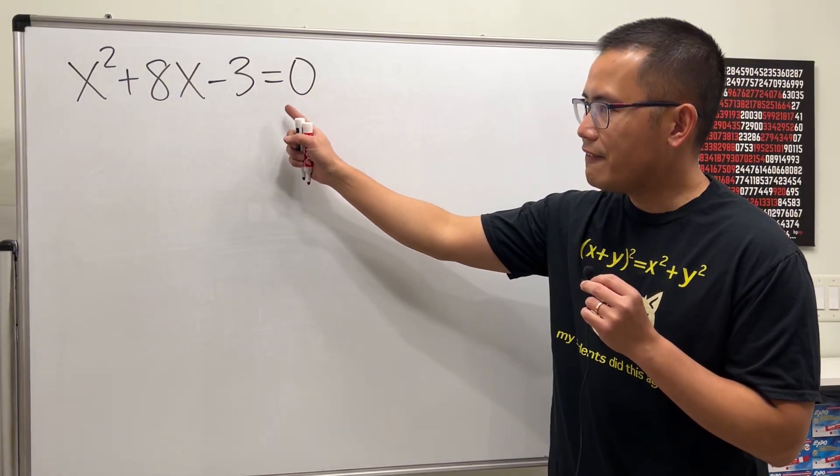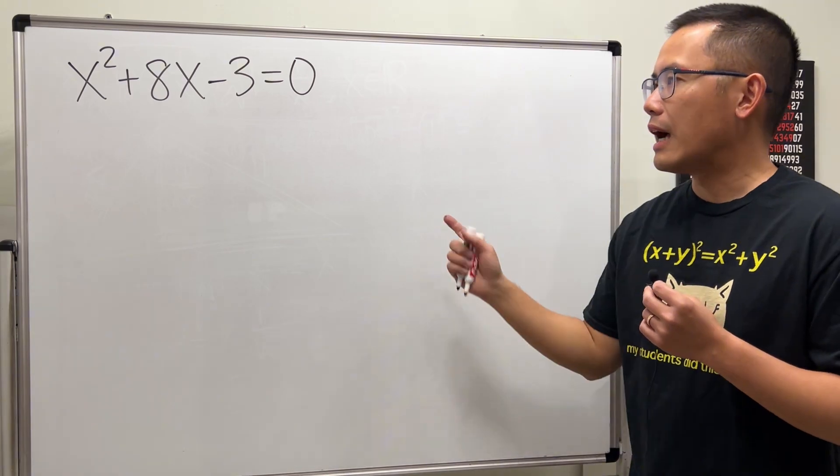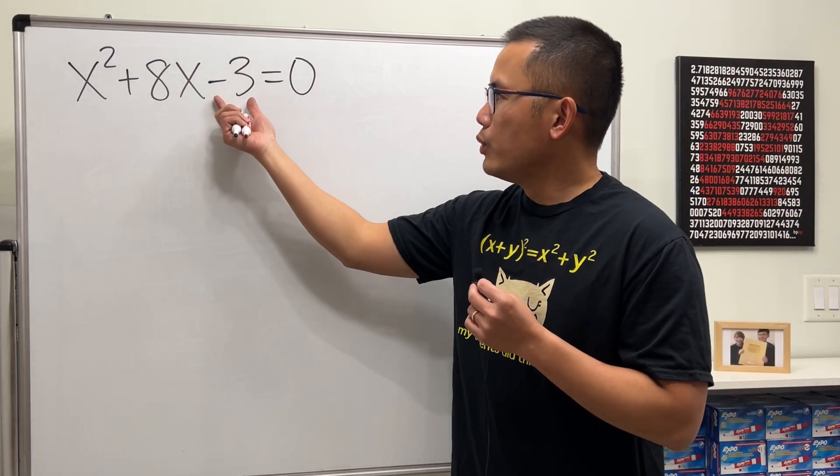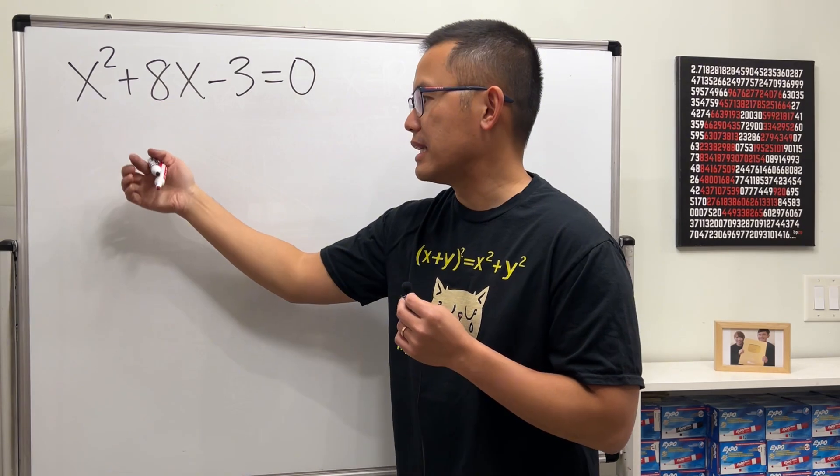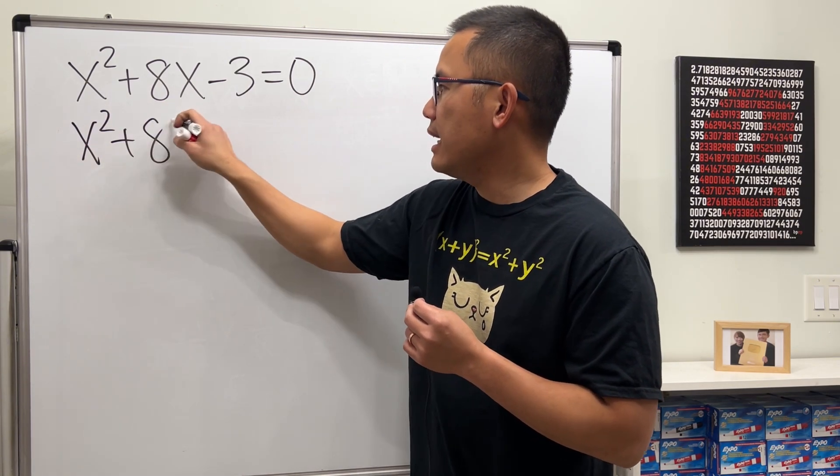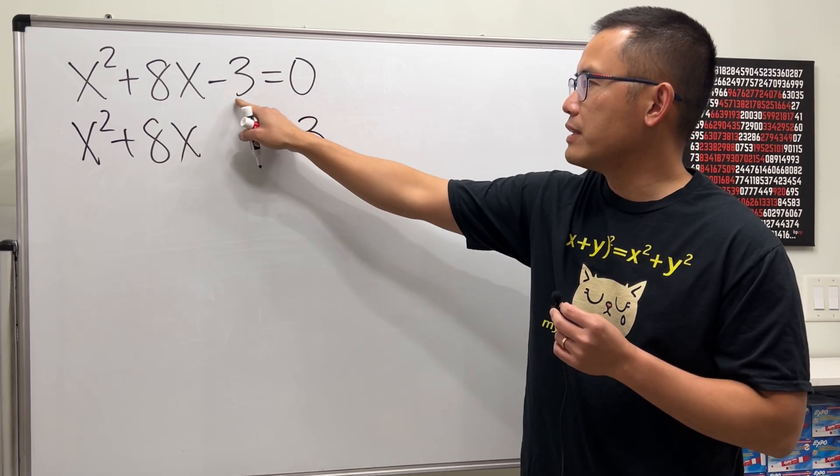Let's talk about how we can solve this non-factorable quadratic equation by completing the square. First, we want to add 3 to both sides because we just want to have these two terms on the left-hand side, so x² + 8x (leave a space) equals 3 after we add 3 to both sides.